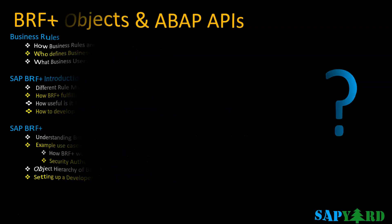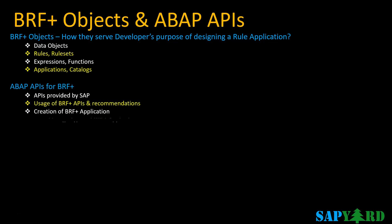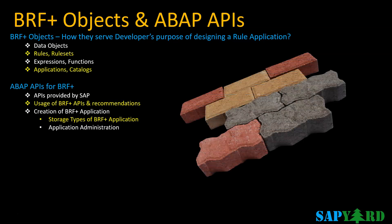There has to be a building block for everything. Data objects describe the data types and at the same time serve as the data carriers in the context or the result. Just like in ABAP Dictionary data types, we have data element, structure, and table types. Similarly, in BRF Plus data object types, we have element, structure, and table.